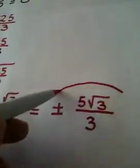So there are my two answers: 5 radical 3 over 3, and negative 5 radical 3 over 3.